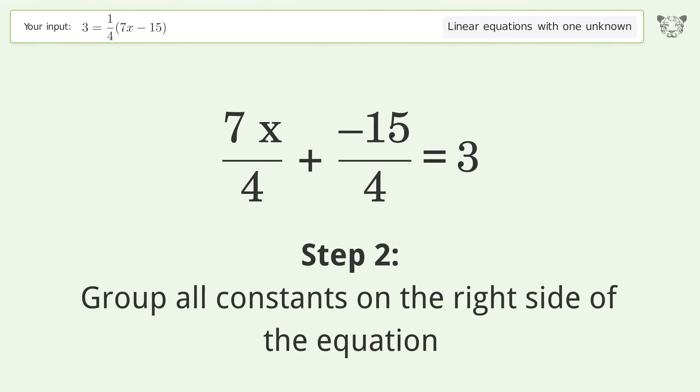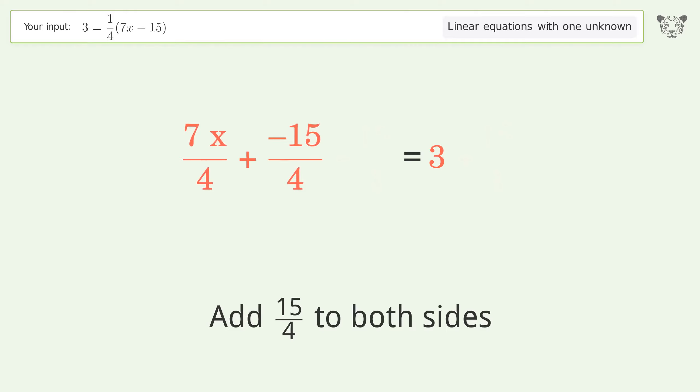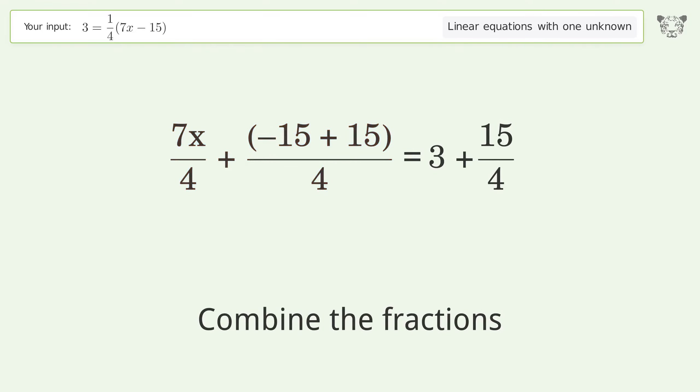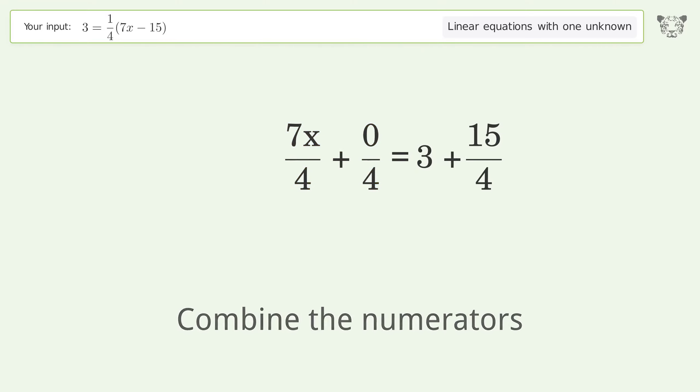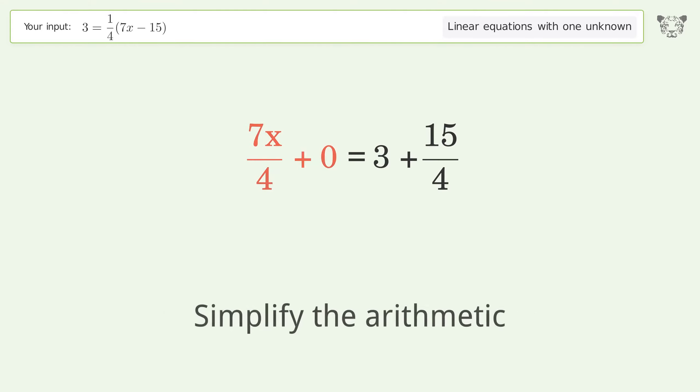Group all constants on the right side of the equation. Add 15 over 4 to both sides. Combine the fractions. Combine the numerators. Reduce the zero numerator. Simplify the arithmetic.